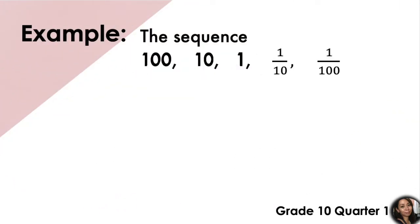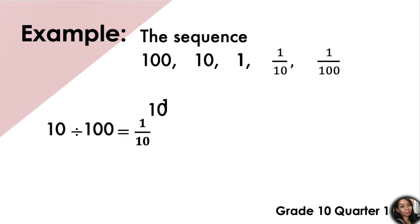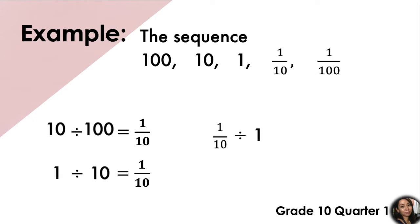Let's try the next example. The sequence 100, 10, 1, 1 tenth, and so on. Let's check if there is a common ratio. 10 divided by 100 is 1 tenth. 1 divided by 10 is equal to 1 tenth. 1 tenth divided by 1 is also 1 tenth. 100 divided by 1 tenth is equal to 1 tenth. We see that there is a common ratio.